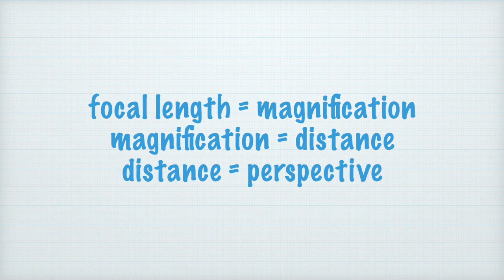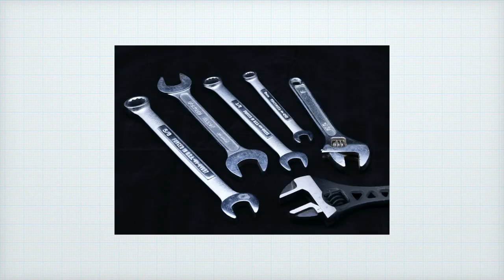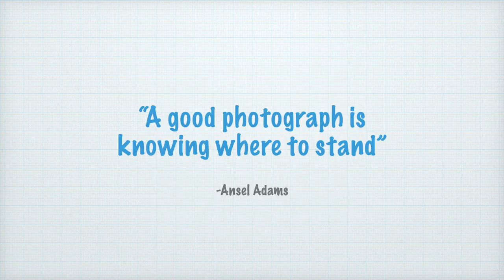Why do we have different focal length lenses? Having different focal lengths allows the photographer to work at different camera-to-subject distances — when you can't get close, such as at a sporting event or with wild animals, or when there's no room to back up. The less obvious but more important reason is to give you the choice of where to position your camera for control over the perspective of the scene. I make an analogy between a lens and a wrench: they come in different sizes and you use the one that fits the situation. As Ansel Adams said, a good photograph is knowing where to stand.